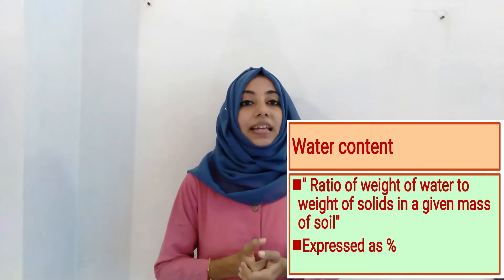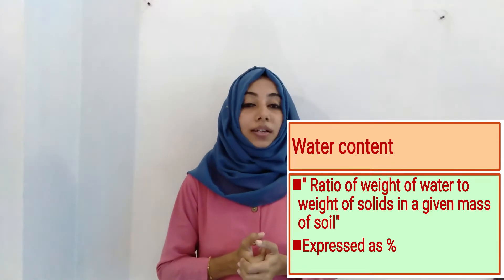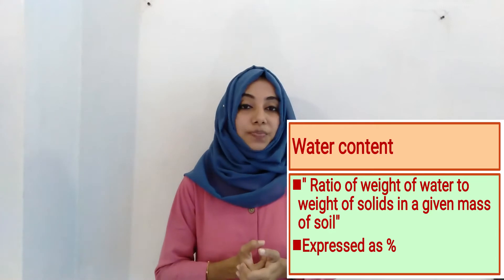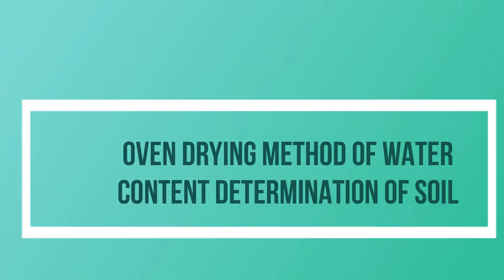Water content also gives an idea about the state of soil in the field. Water content is defined as the ratio of weight of water to weight of soil, and it is always expressed as a percentage.